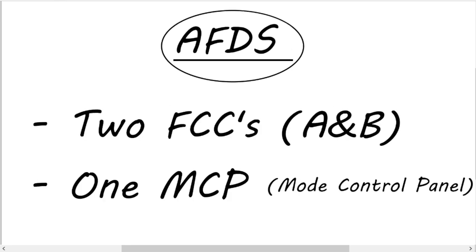We have the autopilot flight director system, AFDS. It consists of two independent flight control computers referred to as FCC A and B, and consists of one mode control panel — those are the main inputs of the autopilot flight director system. You'll notice the FMC is not listed here, and let's have a look at why that is.